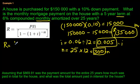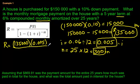R is equal to 135,000 times I, which is 0.005. And we're going to divide that by some craziness. It's going to be 1 minus 1 plus I, 0.005, to the exponent negative, well, it's N. N was 300, so negative 300.